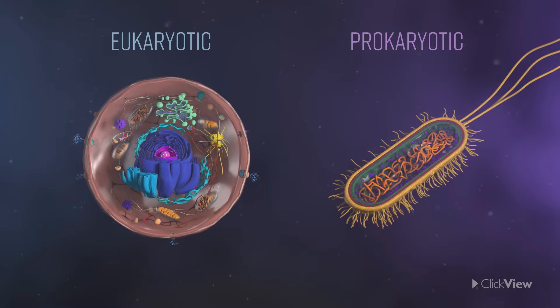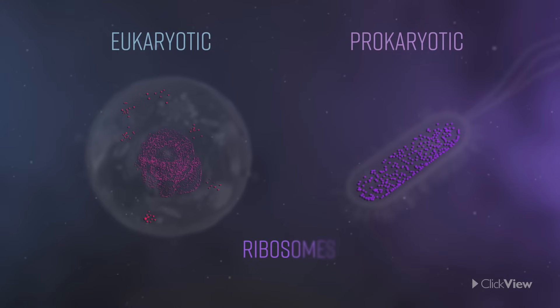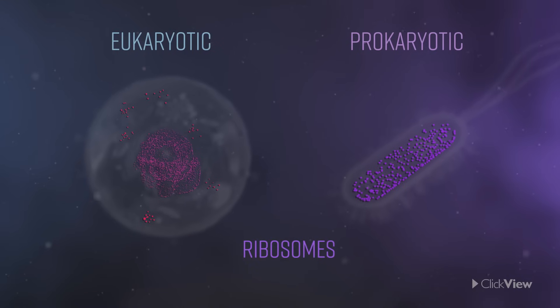Both types contain ribosomes, but in eukaryotic cells they are bigger and more complex and bound by a membrane.